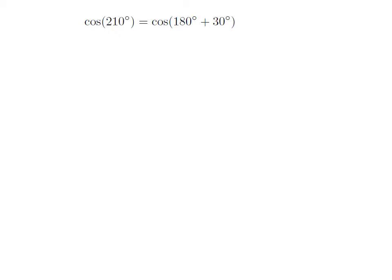As 210 degree is equal to 180 degree plus 30 degree, so cosine of 210 degree is equal to cosine of 180 degree plus 30 degree.